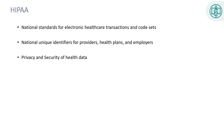HIPAA — with one P and two A's — is the Health Insurance Portability and Accountability Act of 1996. HIPAA is a five-part act, but the part most concerning to the medical coder is Title II, also known as Administration Simplification. Administration Simplification addresses national standards for electronic transactions and code sets, establishes unique identifiers for providers, health plans, and employers to be used nationally, and provides federal protection for the privacy of personal health information. The Privacy Rule defines and limits the circumstances in which an individual's protected health information, or PHI, may be used or disclosed by covered entities.